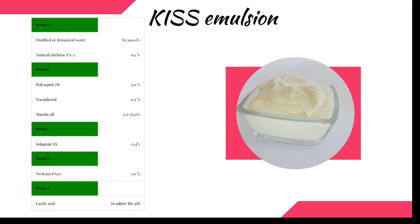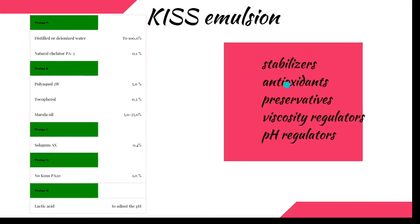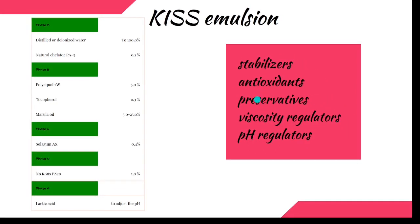I'm going to go through the details of these ingredients to show those of you who are beginners in emulsion making why we are using all of them. Our basic requirements are water as the carrier — here we are using distilled or deionized water — then we have the emulsifier and the oil phase. These are the three basic ingredients to make an emulsion, and as mentioned, we need additives: stabilizers, antioxidants, preservatives, viscosity regulators, and pH regulators to create a safe, stable, and compliant emulsion.